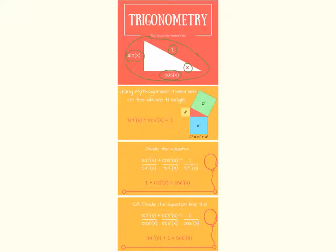So using that, the very first identity, which students tend to remember, is sine squared plus cosine squared equals 1, just using Pythagorean on the above triangle.